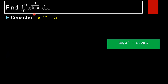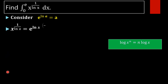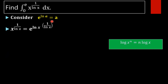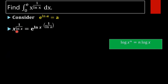First, we simplify x raised to 1 by ln x before integration. Using this identity, we rewrite x raised to 1 by ln x as e raised to ln of x raised to 1 by ln x, where a is x raised to 1 by ln x, so e raised to ln of a equals that function itself.